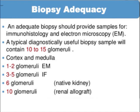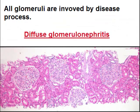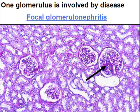An adequate renal biopsy provides a sample for immunohistology and electron microscopy. A typical diagnostically useful biopsy sample will contain 10 to 15 glomeruli — 1 to 2 for electron microscopy and a few for immunofluorescence. This renal biopsy shows 4 glomeruli, and all glomeruli are involved by the disease process, which we call diffuse.